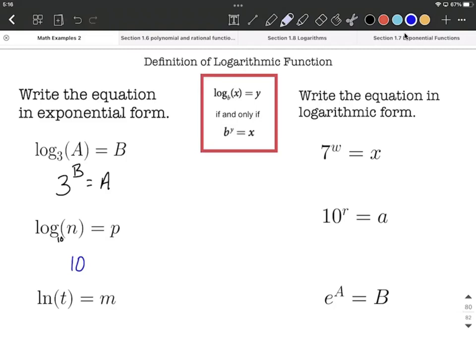In exponential form, it can't be 10 raised to the n power. So P goes up in the exponent to the other side, and we're in exponential form.